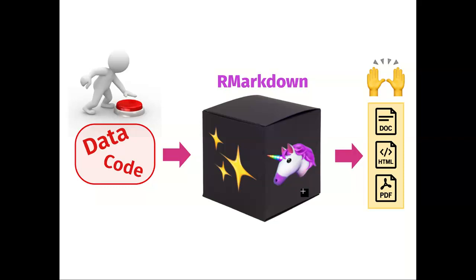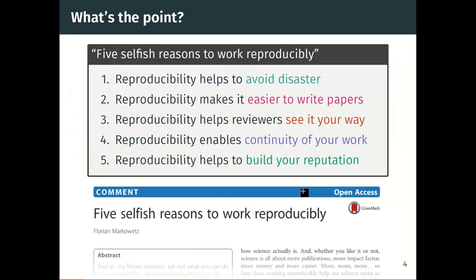What we're aiming for instead is a more integrated approach combining both steps at once. R Markdown is software for carrying out this streamlined approach where we give it our data structure and code, hit a button in RStudio, and get documents — HTML files, PDFs, whatever you like. Today we're going to unpack this black box of what is actually going on.